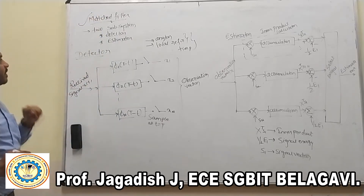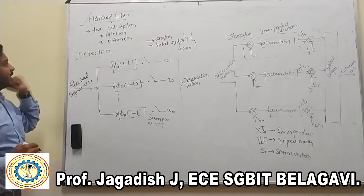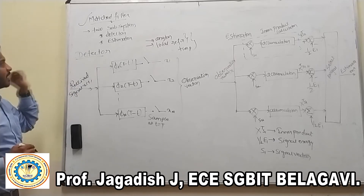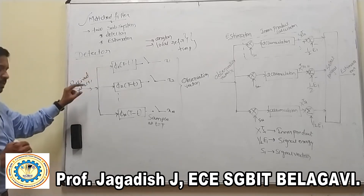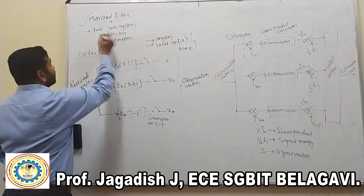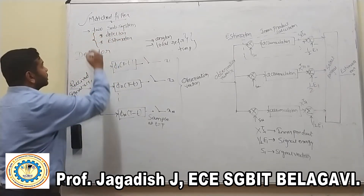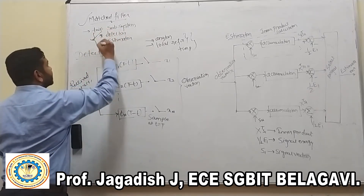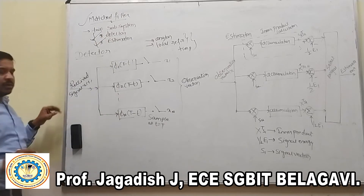This matched filter is a digital multiplier and it requires a reference signal. These matched filters can be mainly subdivided into two paths: the first one is the detector, and the second one is the estimator.